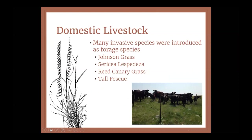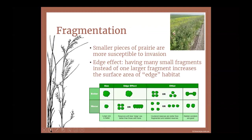Next is domestic livestock. Prairies were a great place to have livestock and many new forage species were introduced for these grazers — and some of those introduced forage species turned out to be invasive. Examples include Johnson grass, Sericea lespedeza, reed canary grass, and tall fescue. With the introduction of those species, sites being restored back to prairie will have those remnant invasives that will have to be taken care of.